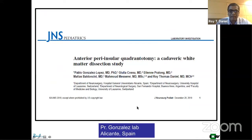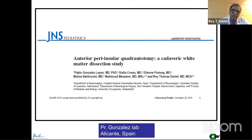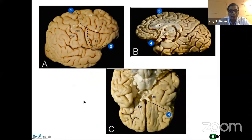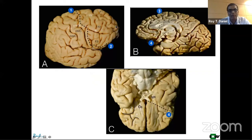Let's go to the cadaveric white matter dissection study that we performed in Pablo Gonzalez's lab in Alicante, Spain, just to show you the anatomy, which is the focus of this talk. The anterior quadrant is the lobe anterior to the primary motor strip, as you can see here. The central sulcus divides, and everything from the pre-motor to the entire prefrontal lobe is the anterior quadrant.